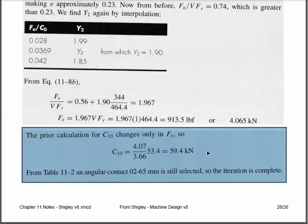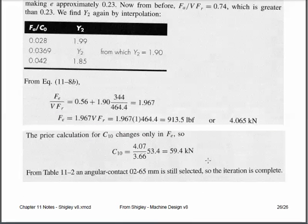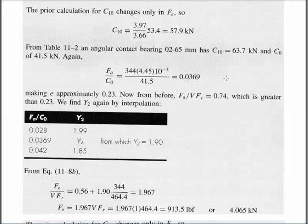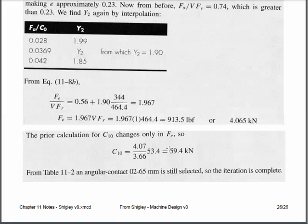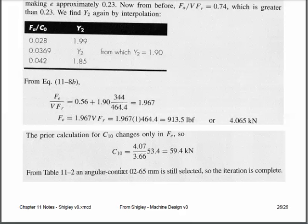I've picked both bearings: the roller bearing at one end and the ball bearing O2-65 at the other end, which carries the axial loading. Both bearings will get the job done. Since the O2-65 is rated at 63.7 but we only need 59.4, we're loading it more lightly — which means either the life goes up, or we could recalculate to find increased reliability. That's as far as we're going to go this semester on bearings.